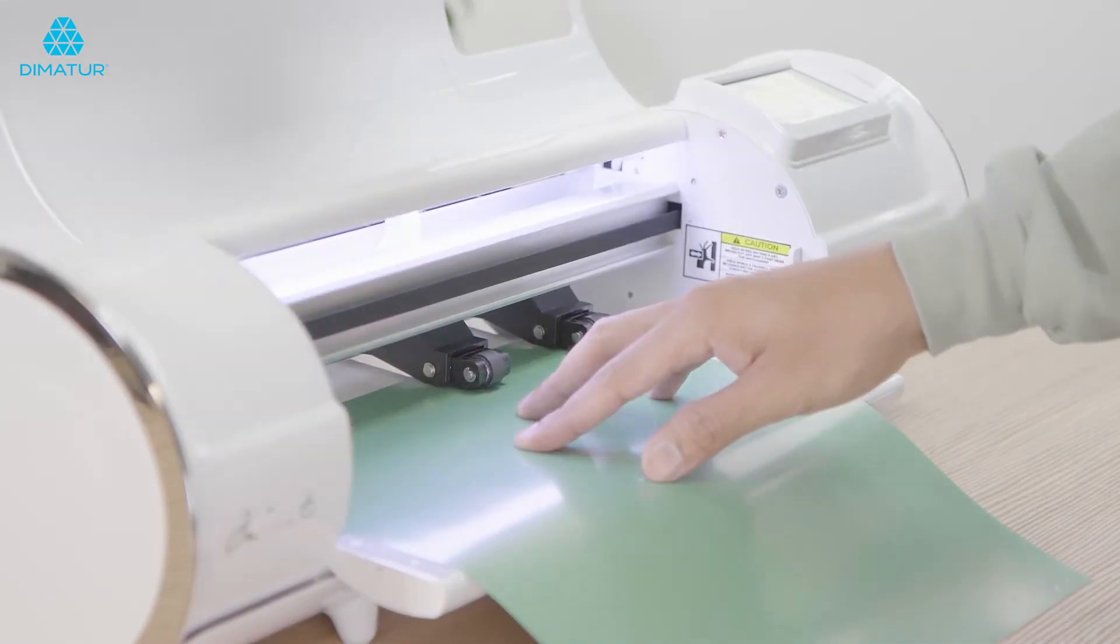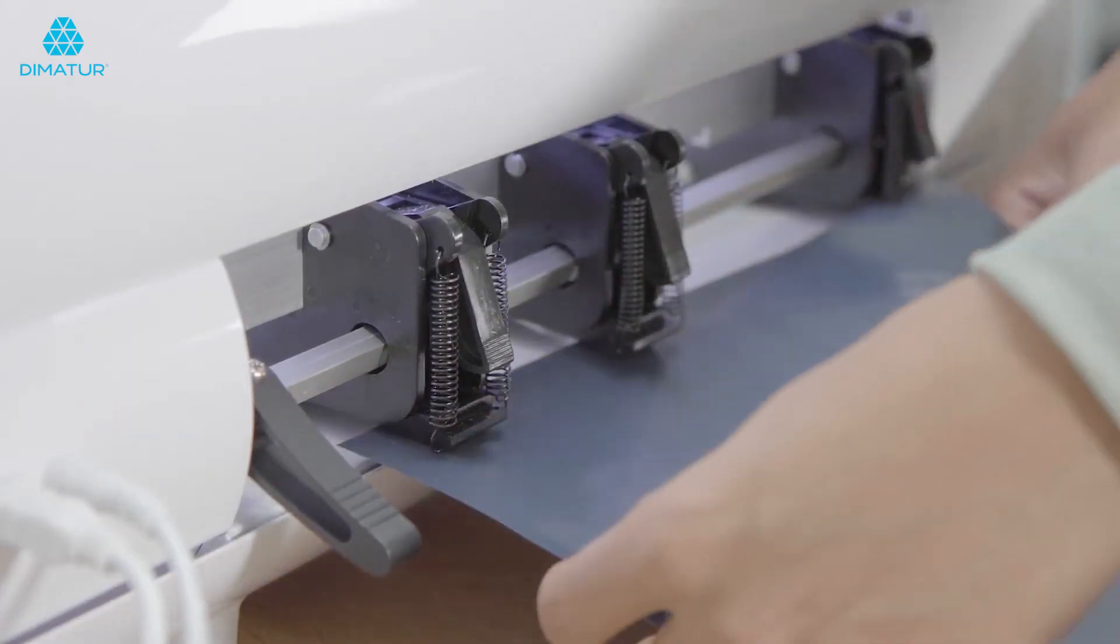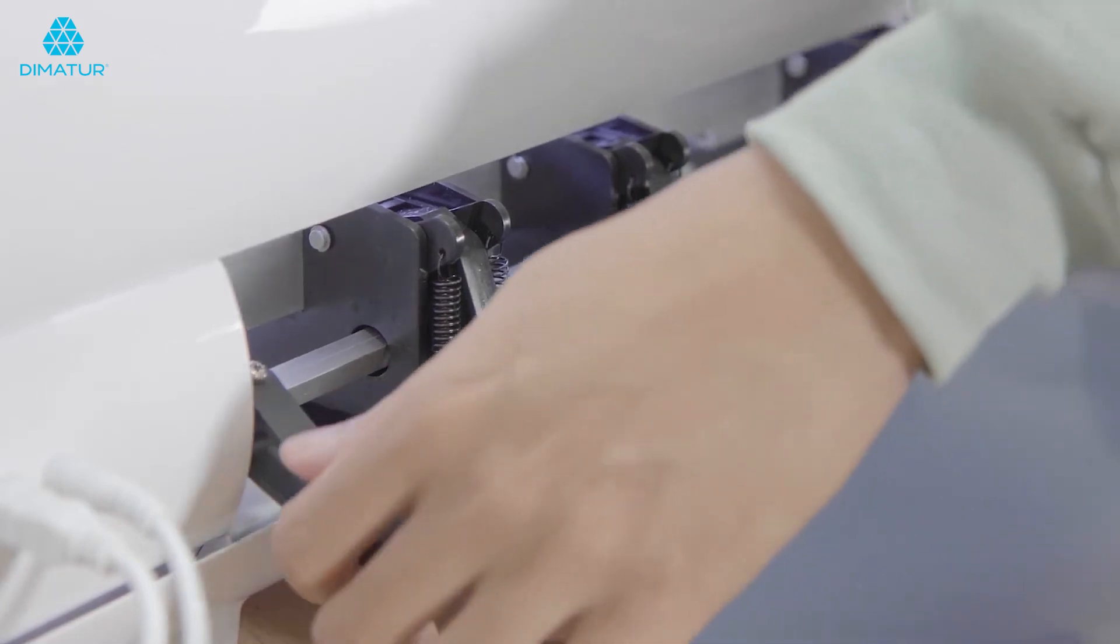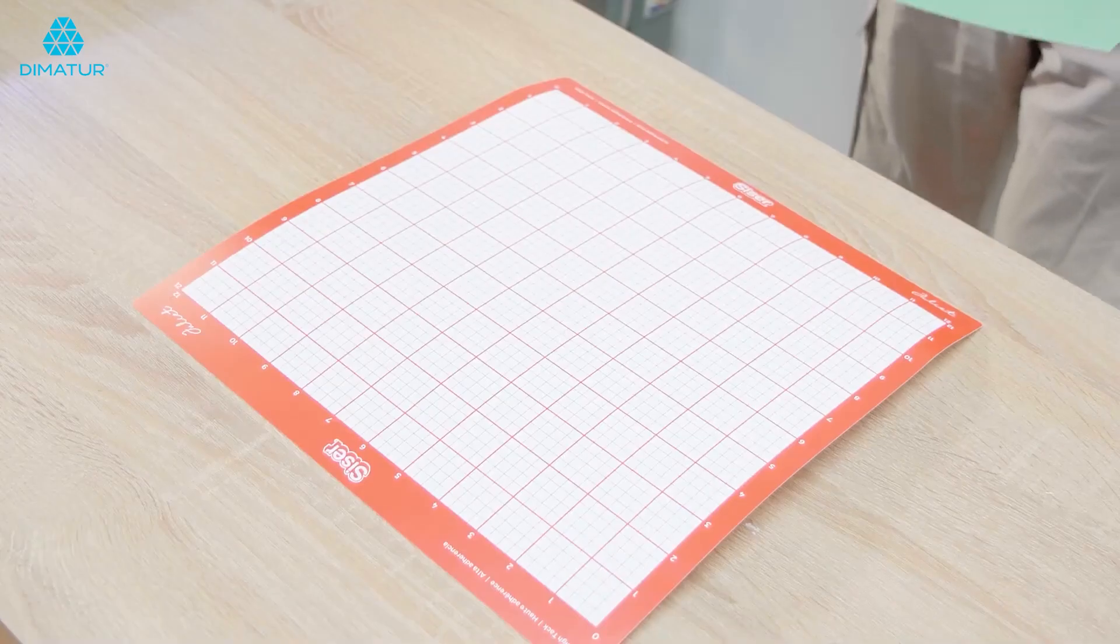Load your material onto the Juliette using the guide strip to align your material. Place the pinch rollers in the closed position by pulling the main pinch lever in the upright position.